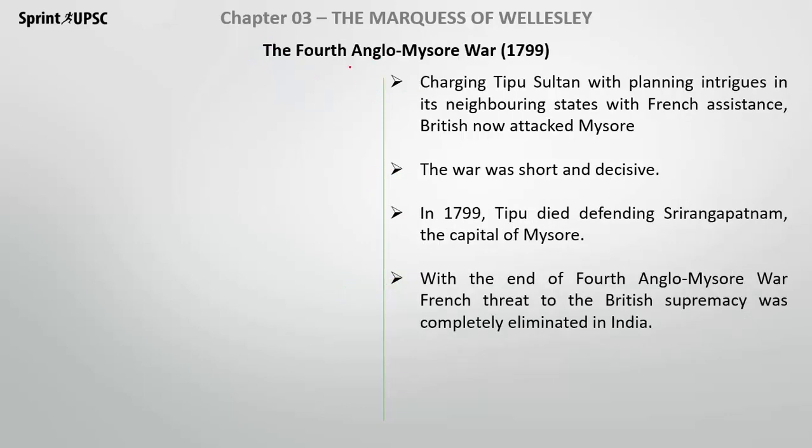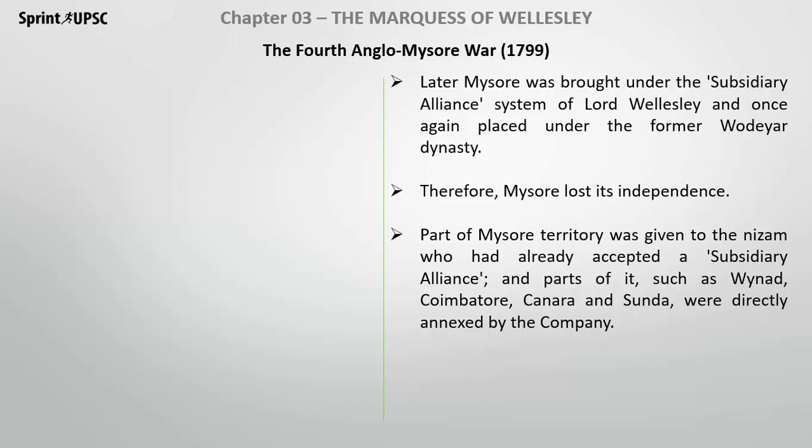Now let's talk about the Fourth Anglo-Mysore War. Charging Tipu Sultan with planning intrigues in neighboring states with French assistance, the British attacked Mysore. It was a very short, decisive war. In 1799, Tipu's death occurred at Shrirangapatnam. After that, the French threat to British supremacy was completely eliminated, because Tipu had been helping the French. Mysore then accepted the Subsidiary Alliance System, and the first ruler of the old dynasty was restored. Some parts of Mysore were given to the British, some to Nizam, and some were directly annexed by the company.